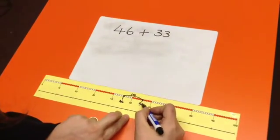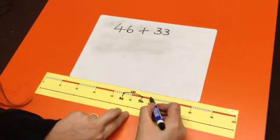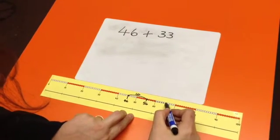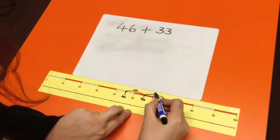Counting on from 56, we need to add another ten. One, two, three, four, five, six, seven, eight, nine, ten. Therefore, jumping another ten.